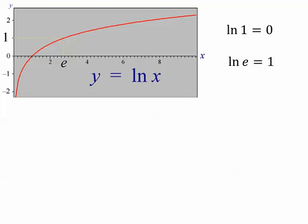As x approaches 0, coming from the right, it is going down to negative infinity. We also know that as x goes out to infinity, this function continues to grow. We know that log 1 equals 0, and log e equals 1.